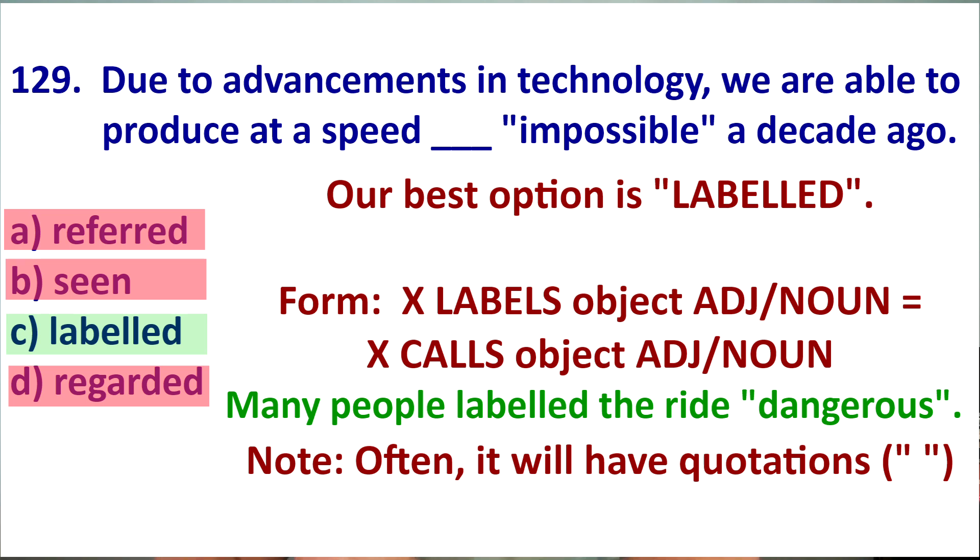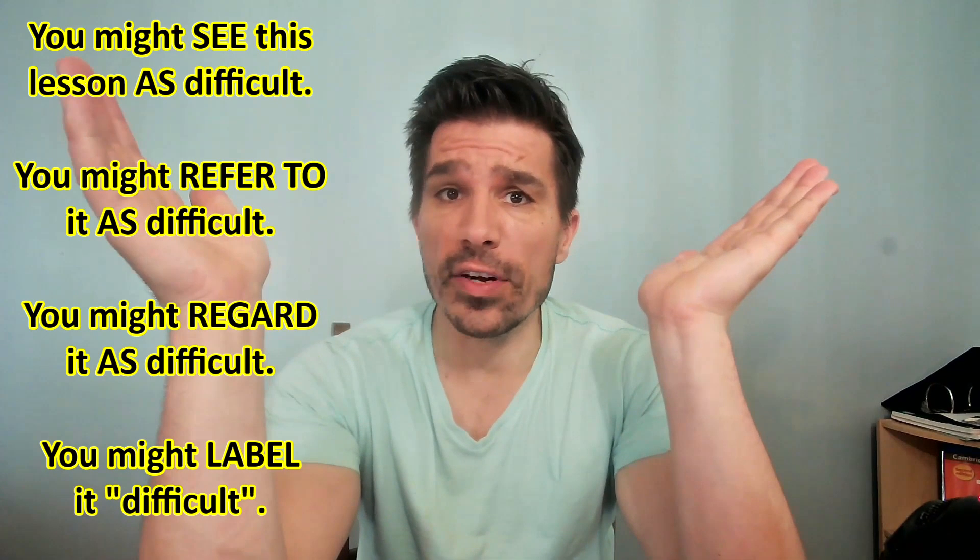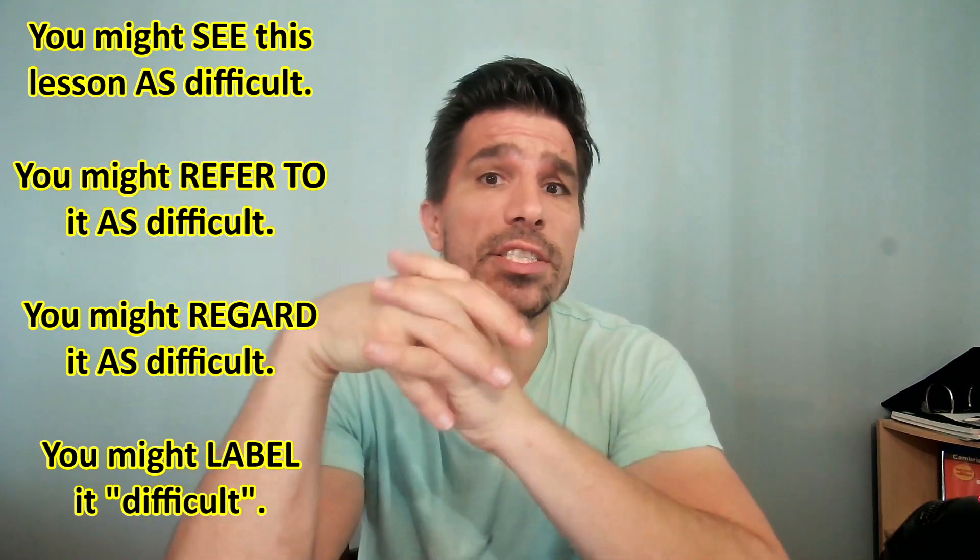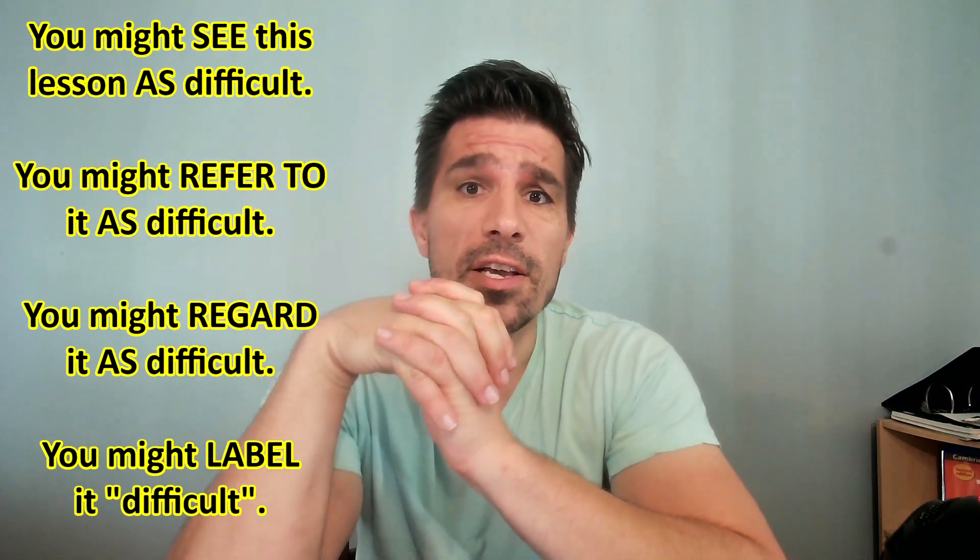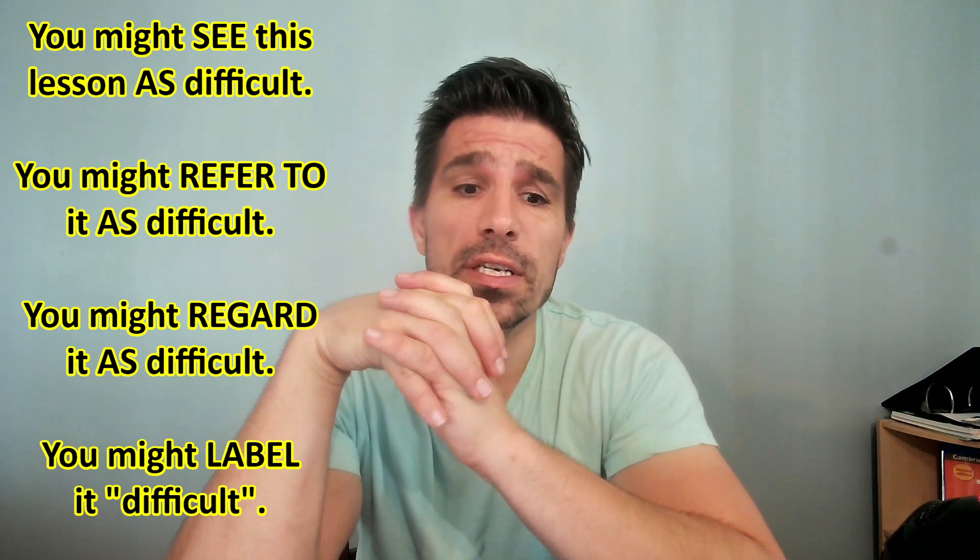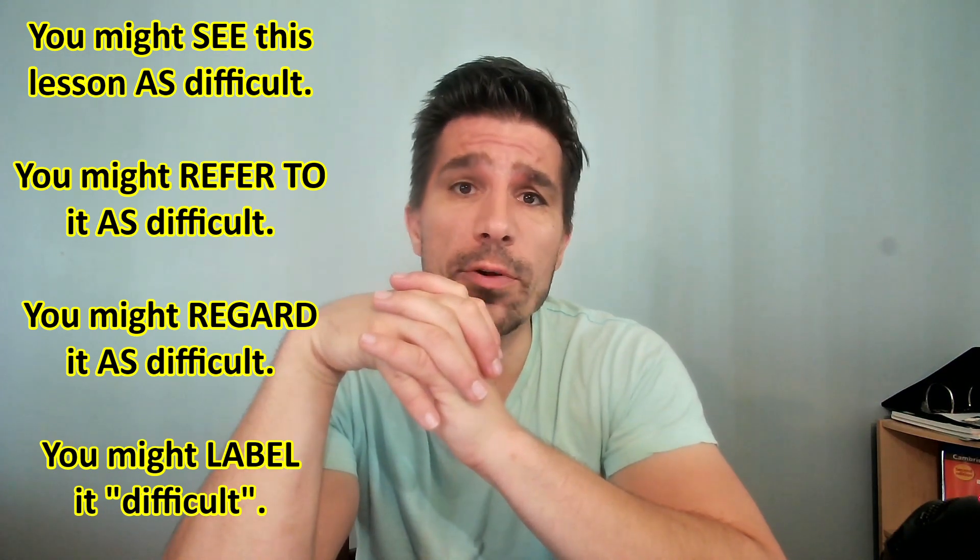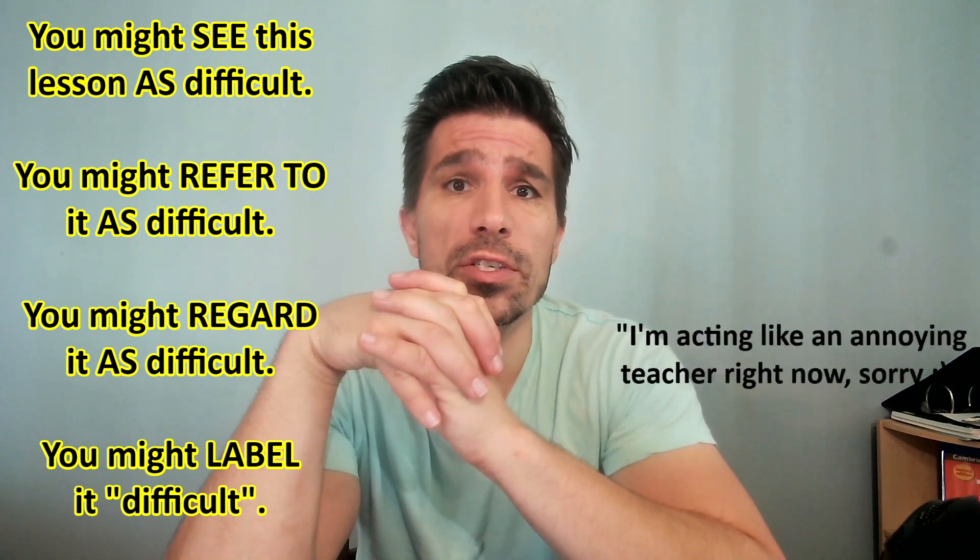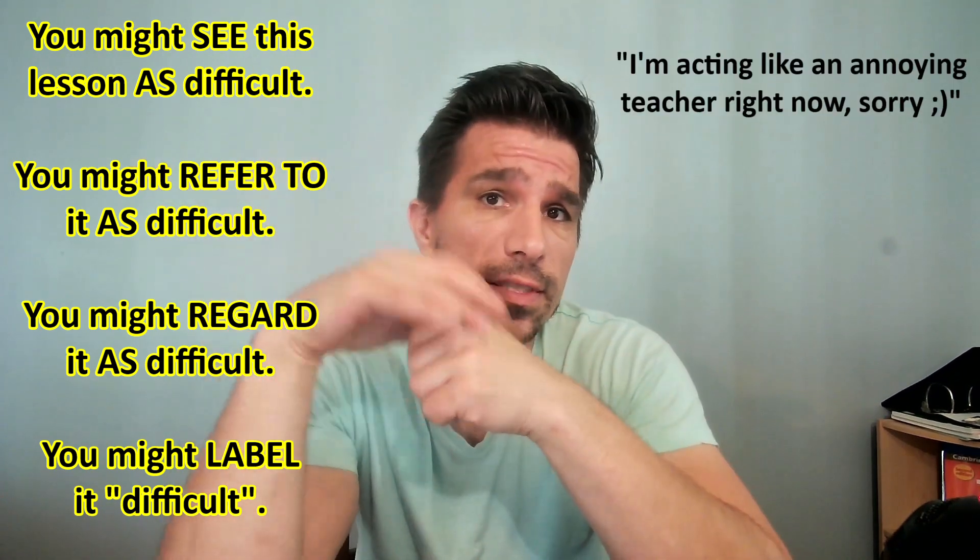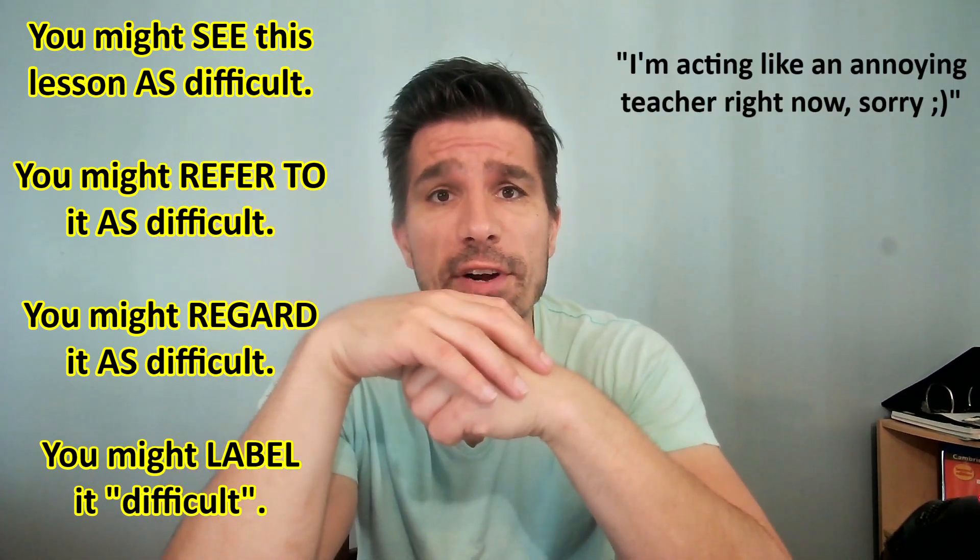All right, so the answer is label. We got the answer. It is C. So, it was produced at a speed that was labeled impossible. That was called impossible. A very tough lesson. Very challenging. Some collocations. You might see this lesson as difficult. You might refer to this lesson as difficult. You might regard this lesson as difficult. Or, you might label it difficult. Have a great day. Bye.